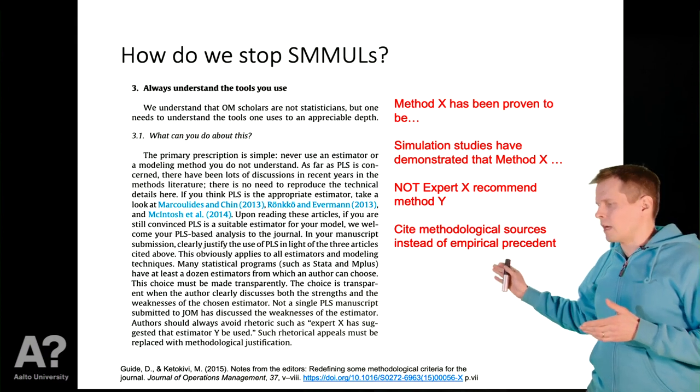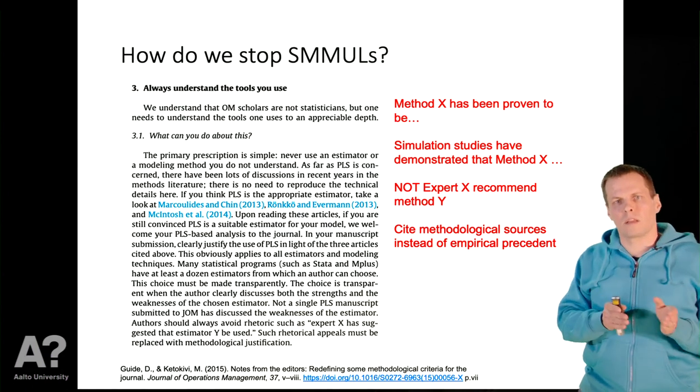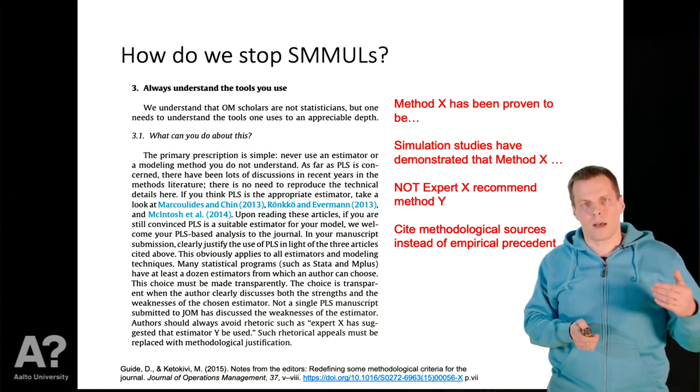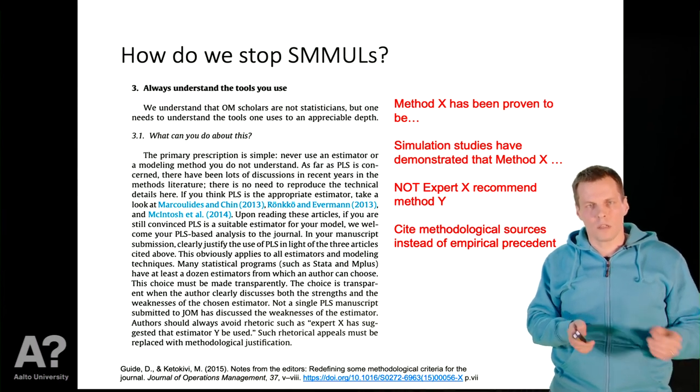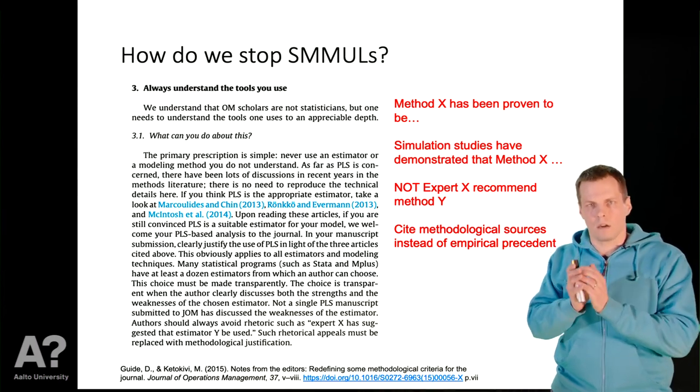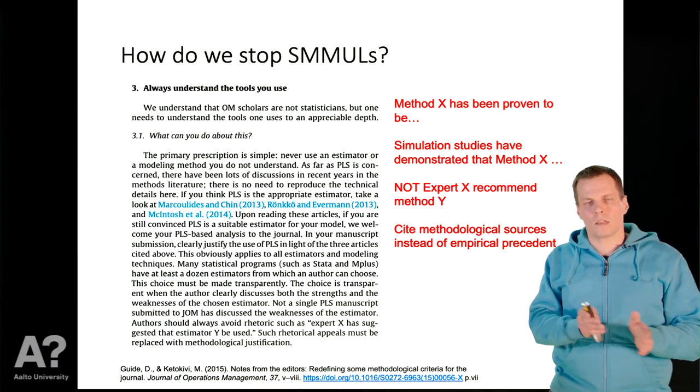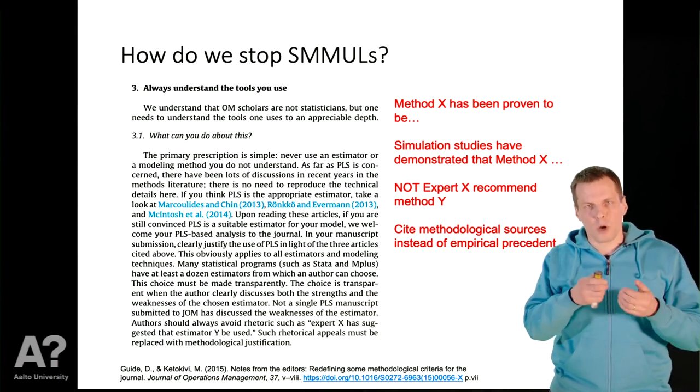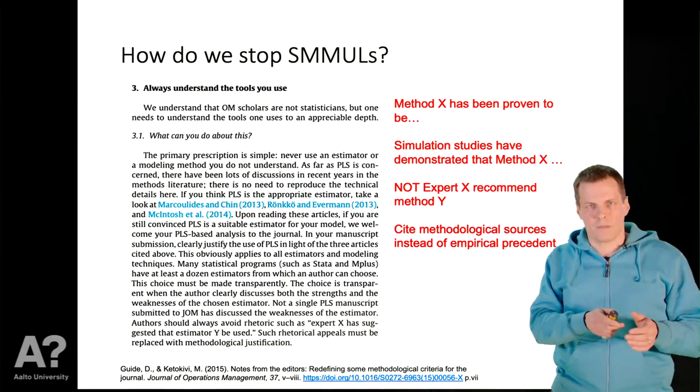Then never apply empirical precedent as justification. As demonstrated by the two-stage least squares example, that someone has done something in a past article in the journal where you publish does not mean that that is the correct thing to do and it's not evidence for the thing being correct. Cite good books, cite articles in applied research methods journals such as Organizational Research Methods, but the fact that somebody has used something before is not evidence for that technique to be useful. It probably correlates with that technique being useful, but it's not direct evidence.